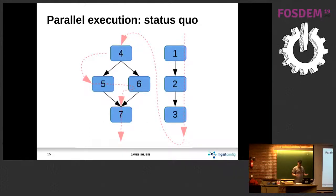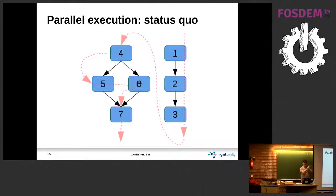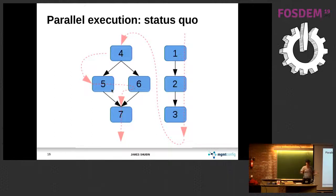So in the config management automation space there's this concept of declarative work. We think of these blue boxes as resources — they're a unit of work. One might set the contents of a file on a server, one might install a package, one might start a service. The black arrows represent the dependencies: one has to happen before two, two before three, and so on. These are all DAGs because it's a dependency graph — you can't have loops.